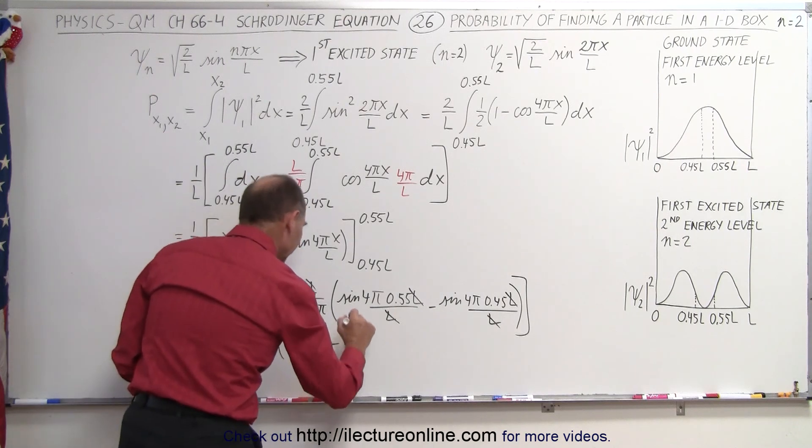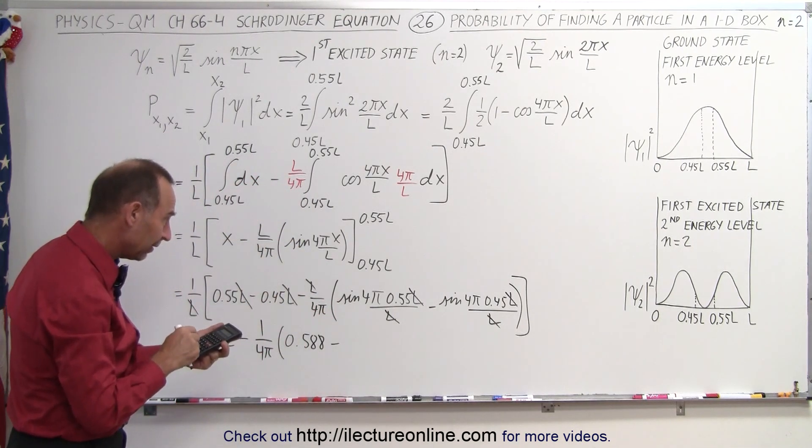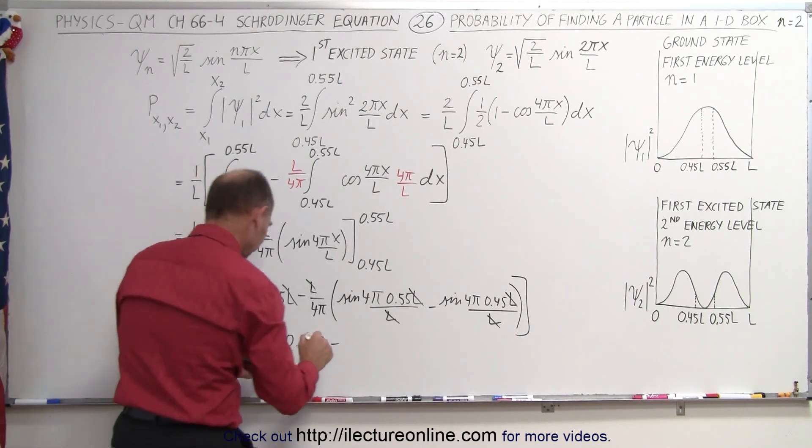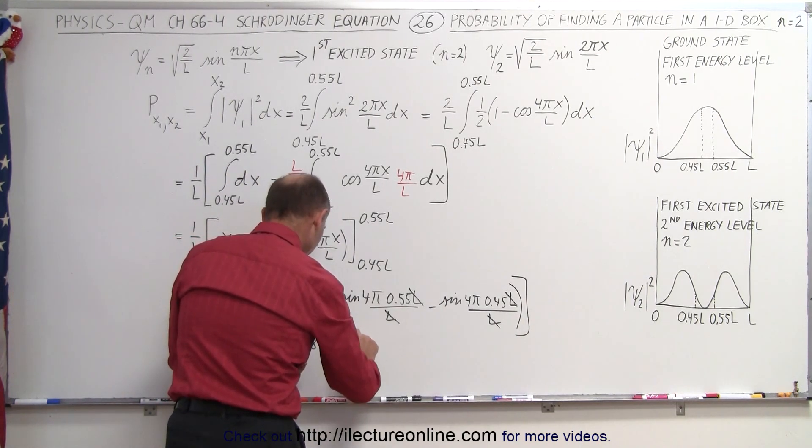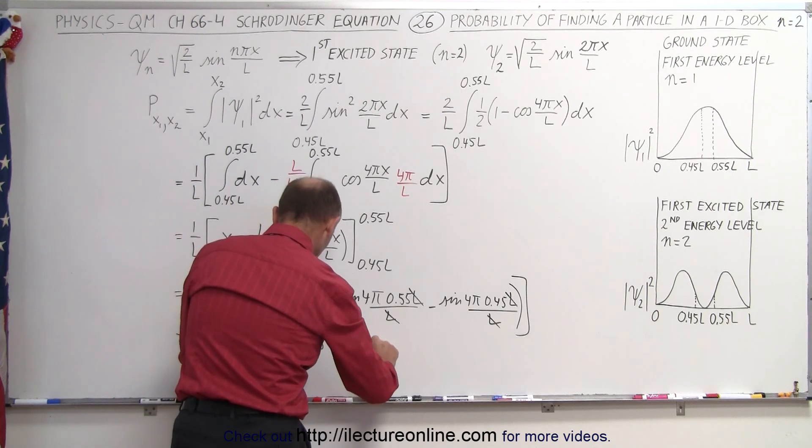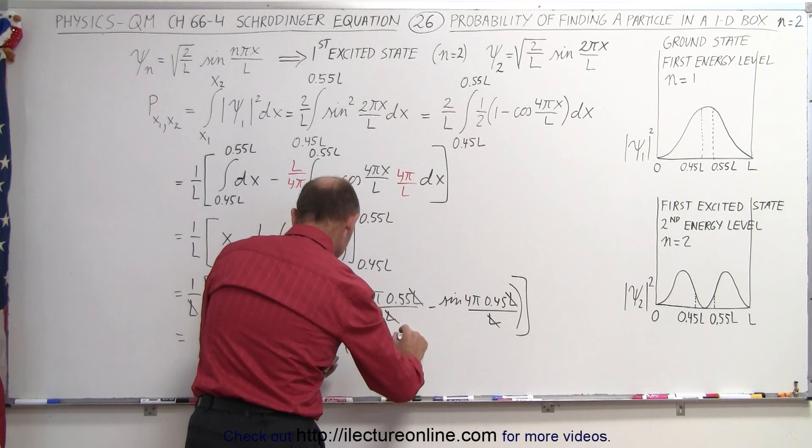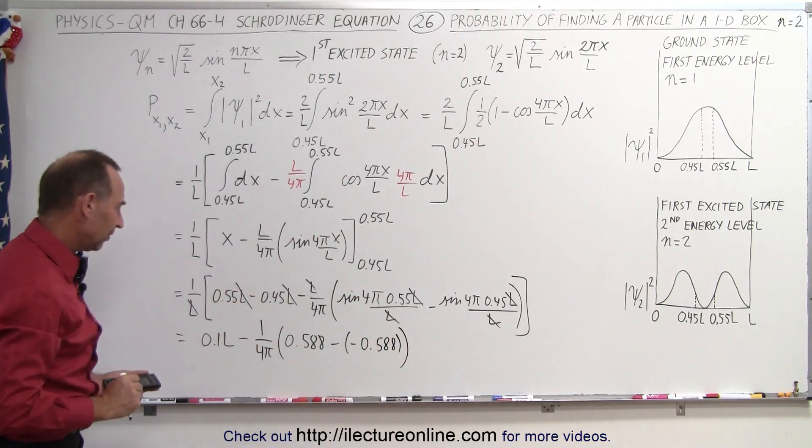and then we go minus plug that in we get 0.45, we get the negative of that. That's interesting. So the negative of that, so negative times the negative 0.588 like this.